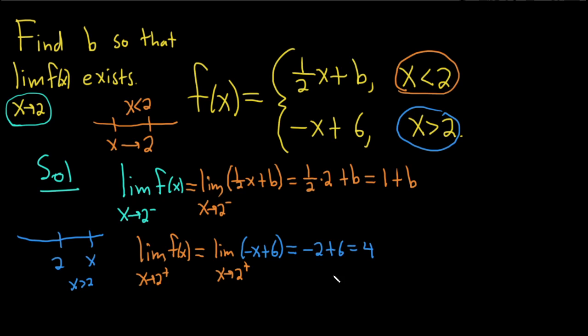Okay, so in order for the limit to exist, this one here, the limit as x approaches 2, the one-sided limits have to exist. That means they have to be numbers, which they both are. And they have to be equal.